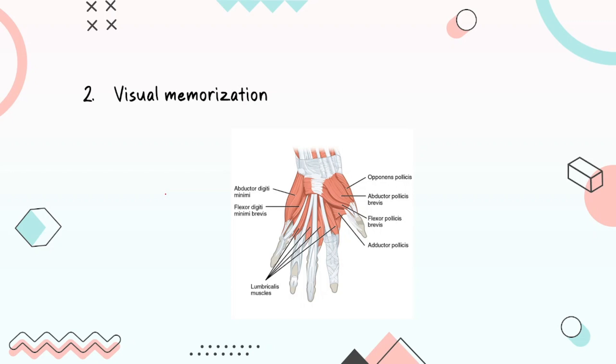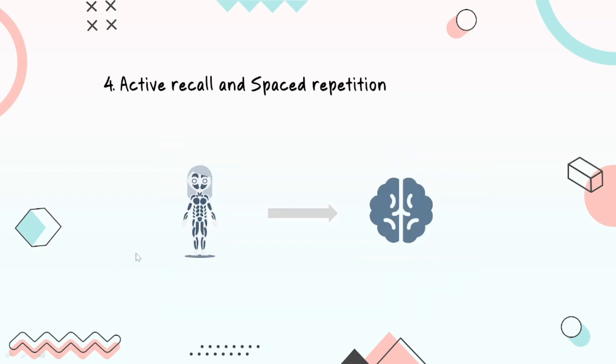I would suggest always having a visual memorization and always knowing what muscles or what nerves or what arteries go where. So if you look at this diagram, it's a really nice diagram. You have a photographic memory of the hand and this is going to help you remember it long term.